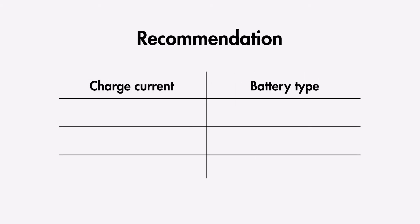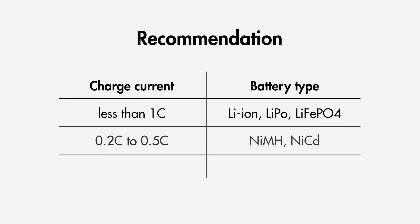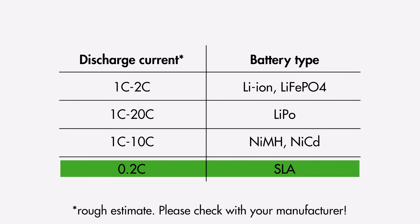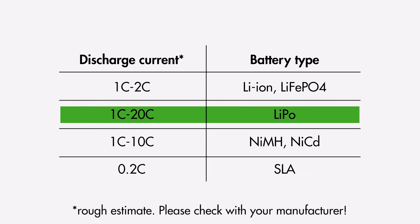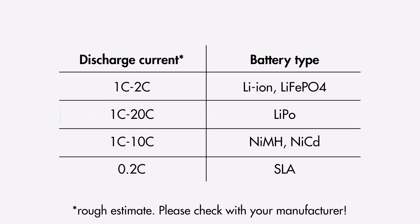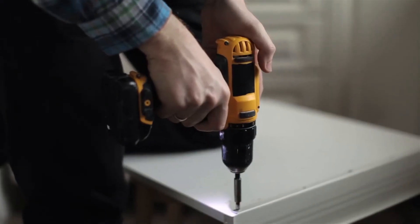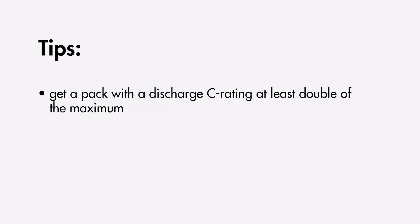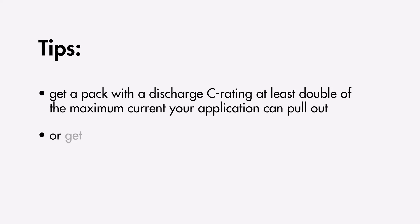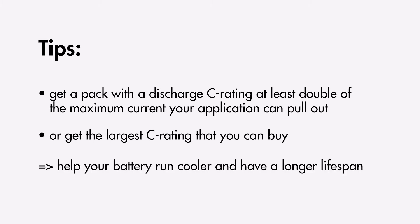In general, for charge current, we recommend charging at a lower rate than 1C for lithium-based batteries, between 0.2C to 0.5C for nickel-based batteries, and less than 0.2C for sealed lead acid batteries. Applying a higher charging current than recommended can permanently damage the battery. For discharge current, sealed lead acid batteries generally have a low discharge rate of 0.2C, while lithium polymer batteries have a higher discharge rate of 10C or 20C. Applications that typically require high C-ratings include drones, power tools, RC cars, and robotics. When choosing your battery pack, get one with a discharge rating of at least double the maximum current your application can draw, which will help your battery run cooler and have a longer lifespan.